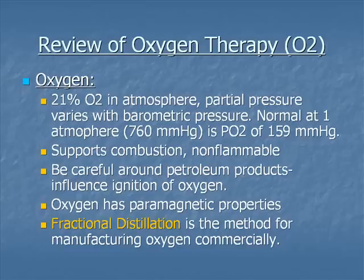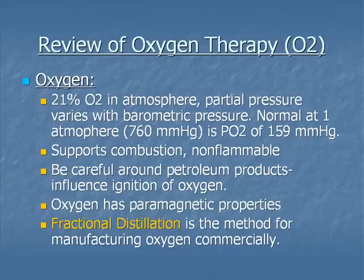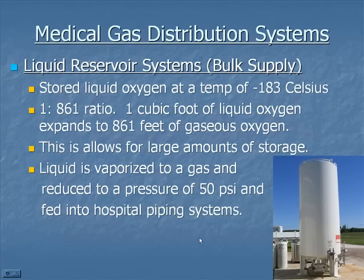Oxygen has paramagnetic properties. There's an oxygen analyzer — an older one known as the Beckman — based on Pauling's Principles of Paramagnetism. Oxygen is produced by the process of fractional distillation, which produces the majority of our liquid oxygen. Here's a picture of a bulk liquid oxygen tank.